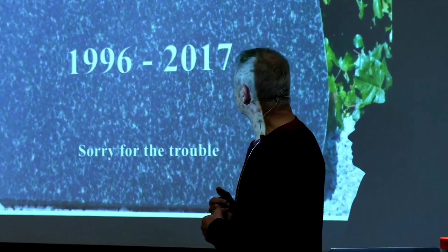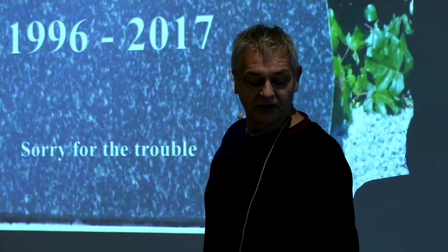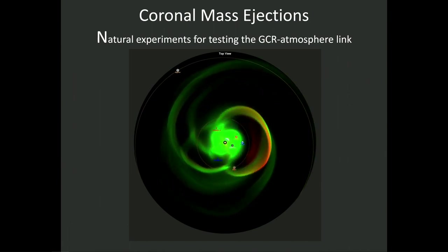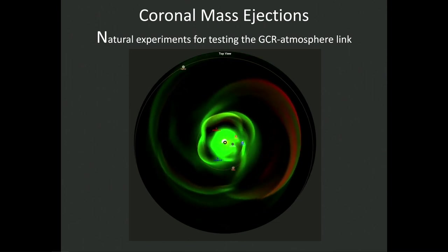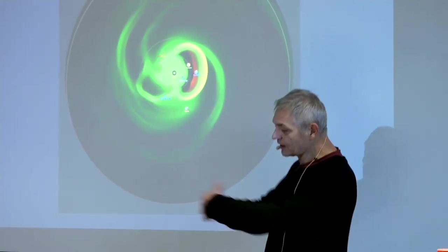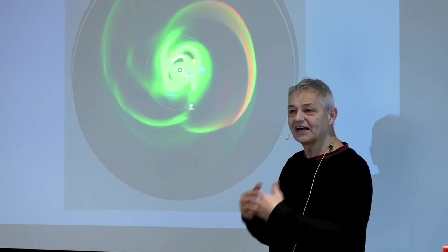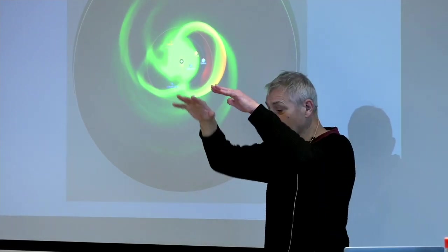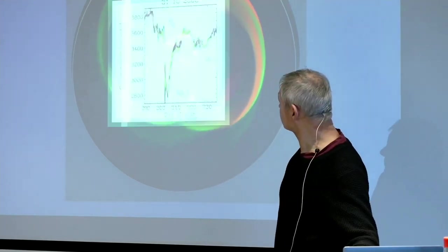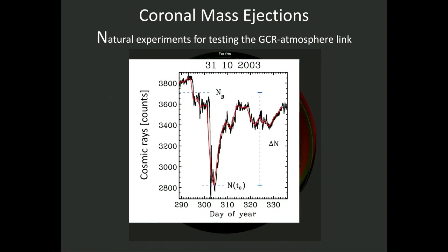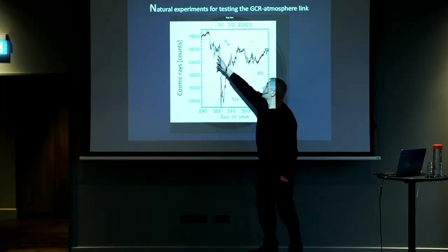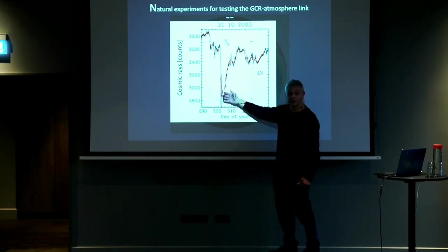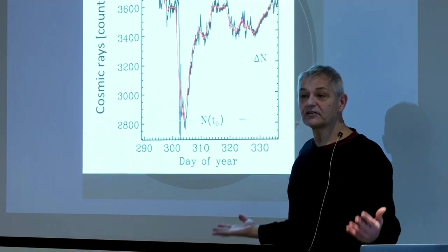However, remember — this was all done by numerical models. We can actually ask nature itself if this effect exists. What you see here is the sun in the middle and the Earth, with explosions from the sun called coronal mass ejections that throw out a lot of plasma. This plasma works as an umbrella against cosmic rays. In 2003 — actually Halloween — you can see a big drop of almost 30% when this plasma hits the Earth and screens against cosmic rays. That suggests it's like a natural experiment with the whole Earth.